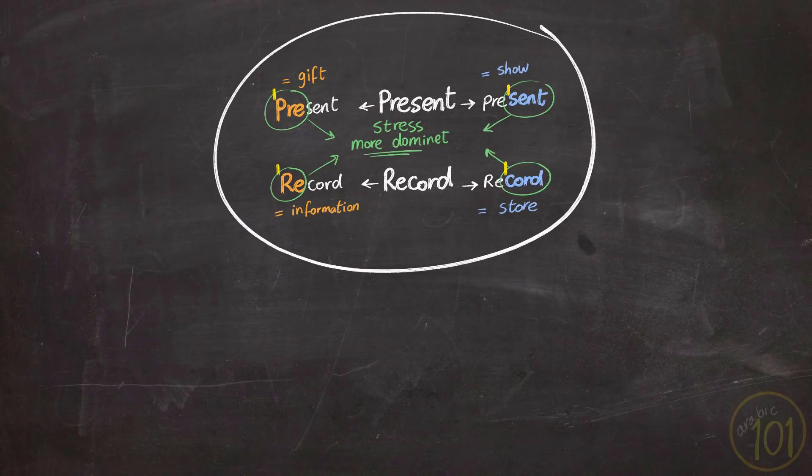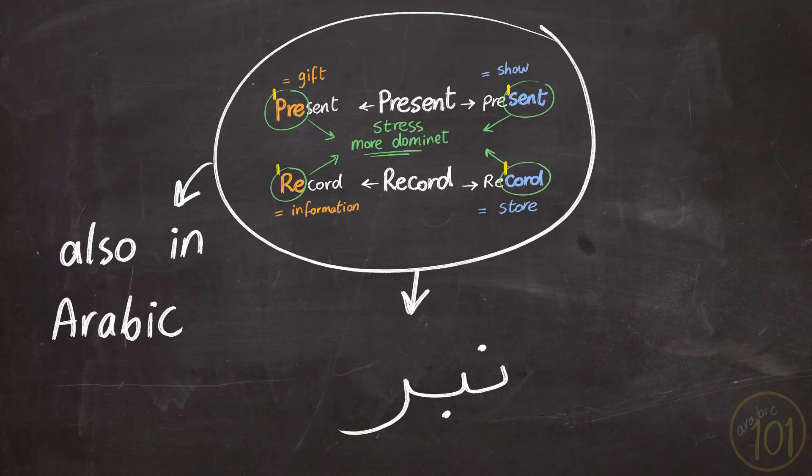Now, we can find the exact same concept in Arabic as well, and we call it Nabr. And in today's lesson, we will highlight its use in the Quran. When it comes to Quran recitation, Nabr can be very important since stress can practically change the meaning and the function of the word.